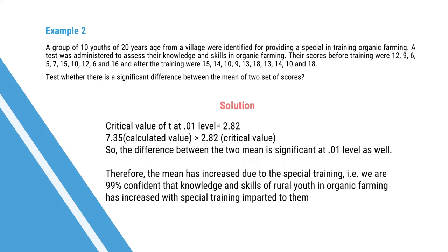Therefore, the mean has increased due to special training — knowledge and skills of rural youth on organic farming has increased. At the 0.01 level, the critical value of T is 2.82. Since 7.35 is greater than 2.82, the difference is significant at the 0.01 level as well. We are 99% confident that knowledge and skills of rural youth in organic farming has increased with the special training, accepting only 1% risk.